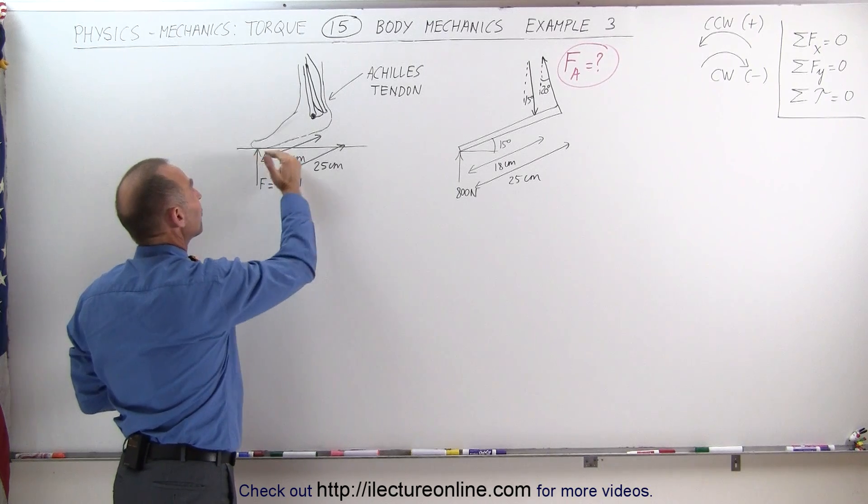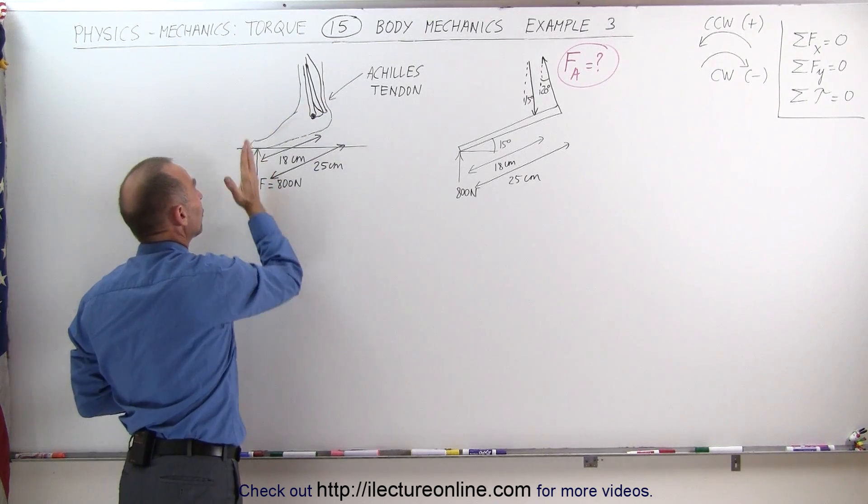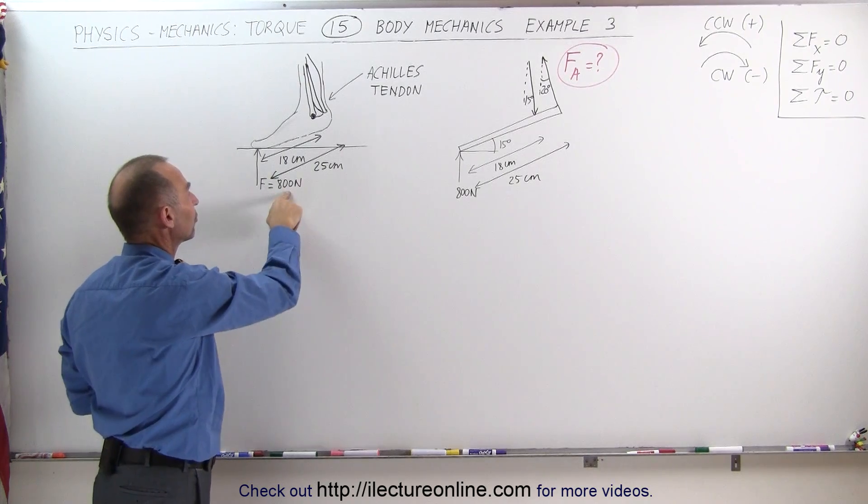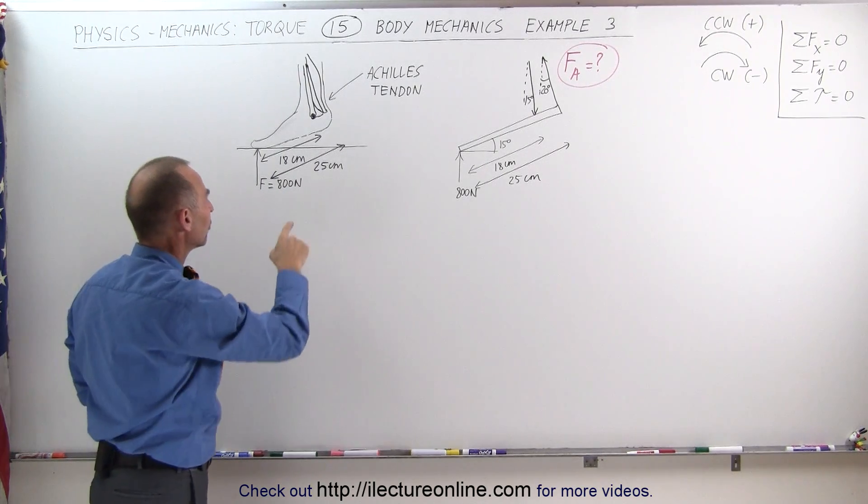which supports typically your entire weight when you're jumping or sprinting or running on your toes. Assume at this moment you have your heel elevated from the ground, your entire weight is on one single foot, 800 Newtons, the entire weight of the person, about an 80 kilogram weight person.